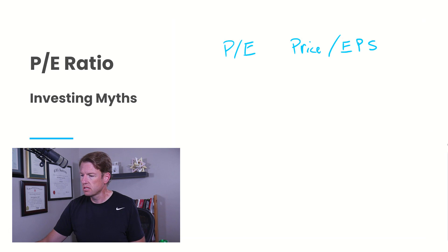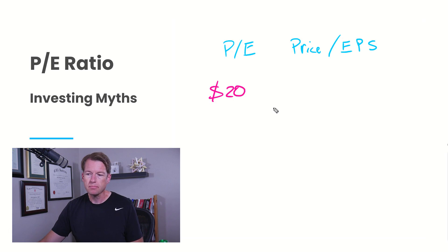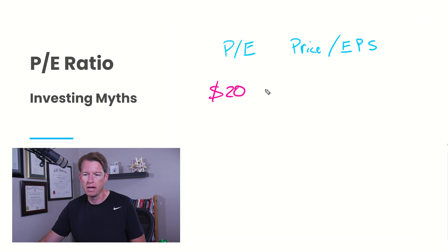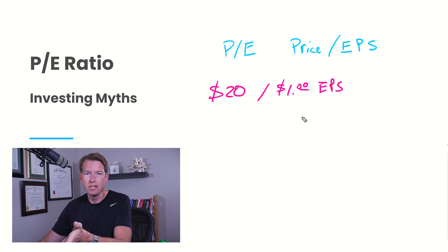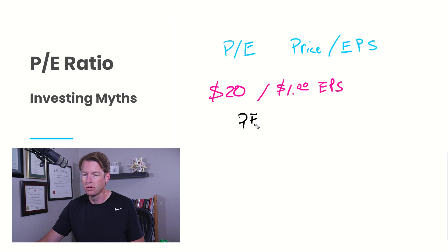Let's imagine there's a stock you're interested in, priced at $20 per share, and it has earnings per share over the last 12 months — since that tends to be best practice — of $1 per share. We can do an easy calculation: the P.E. ratio in this scenario is 20, which is roughly the long-term average for the S&P 500. In fact, 18 to about 27 for the S&P 500 is about average.